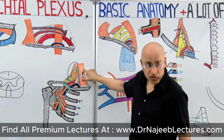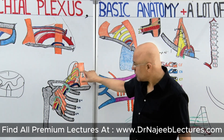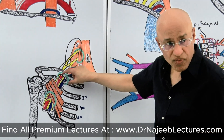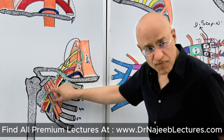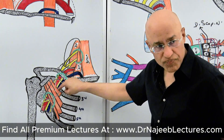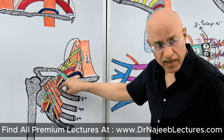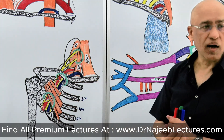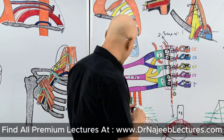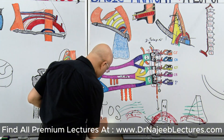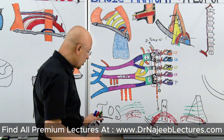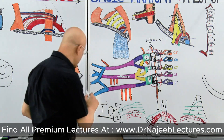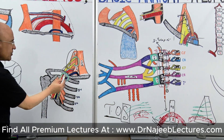This highway runs from the root of the neck, from the inter-scaleni triangle, through the subclavian triangle, through the costal-clavicular space, and through the upper part of the axilla while passing behind the pectoralis minor tendon and below the coracoid. This entire neurovascular highway is called the thoracic outlet.